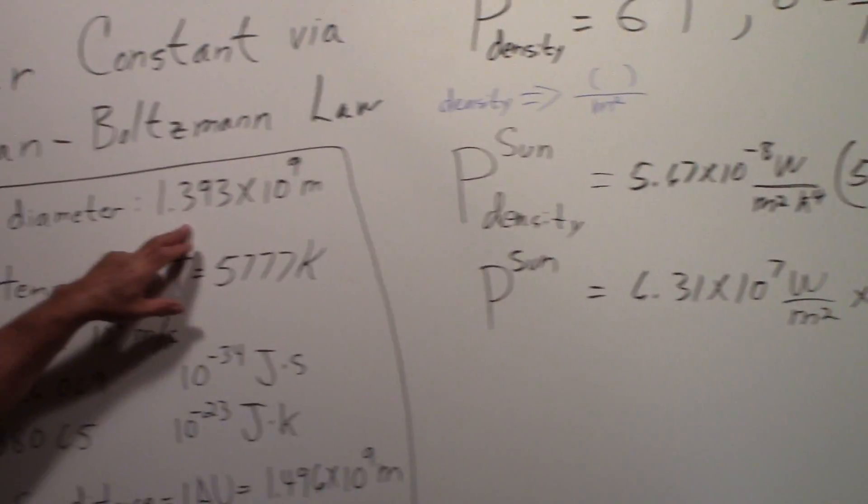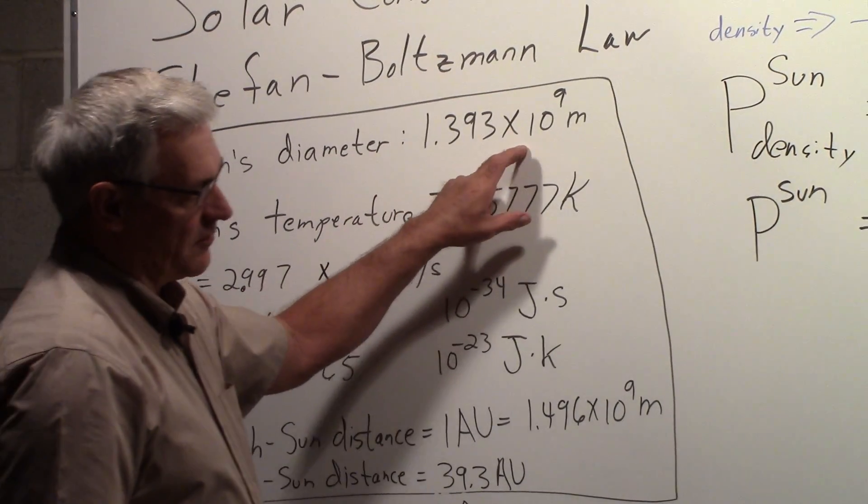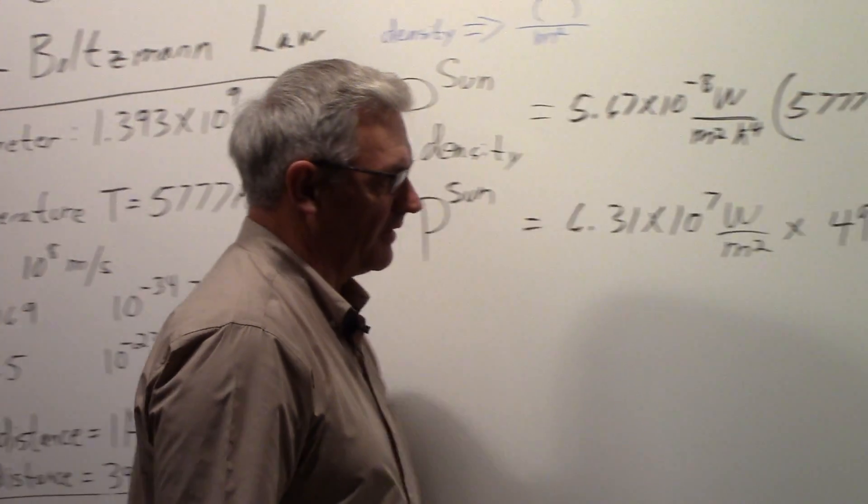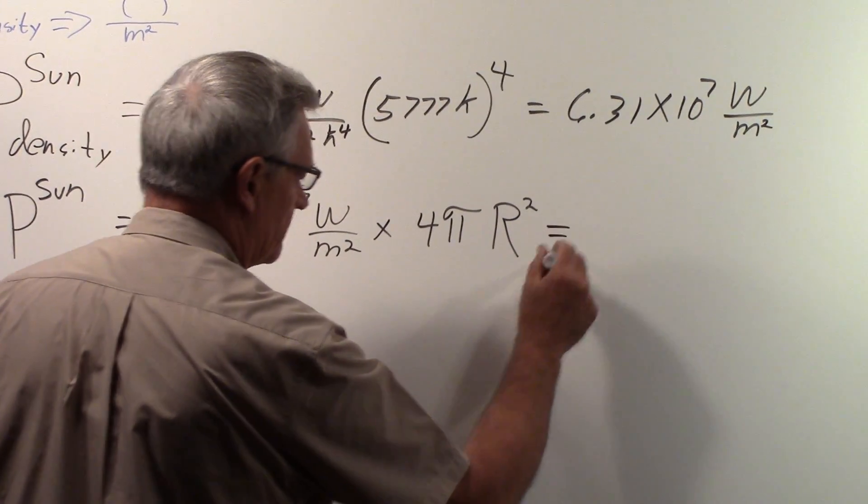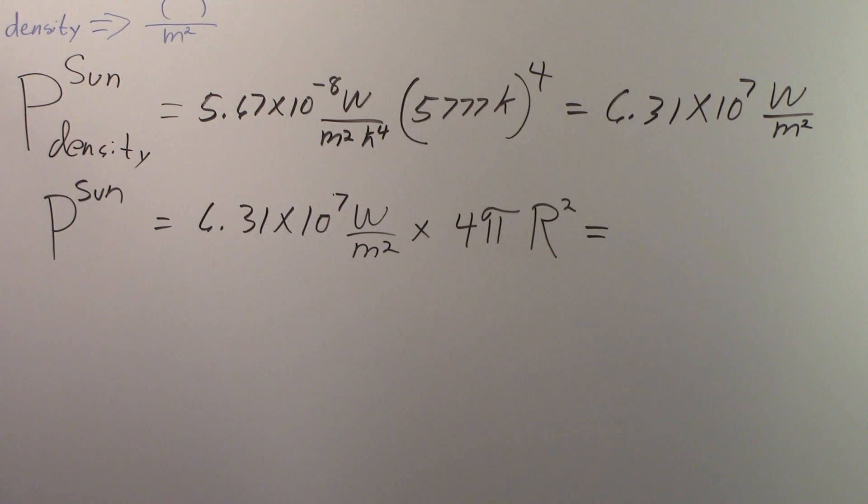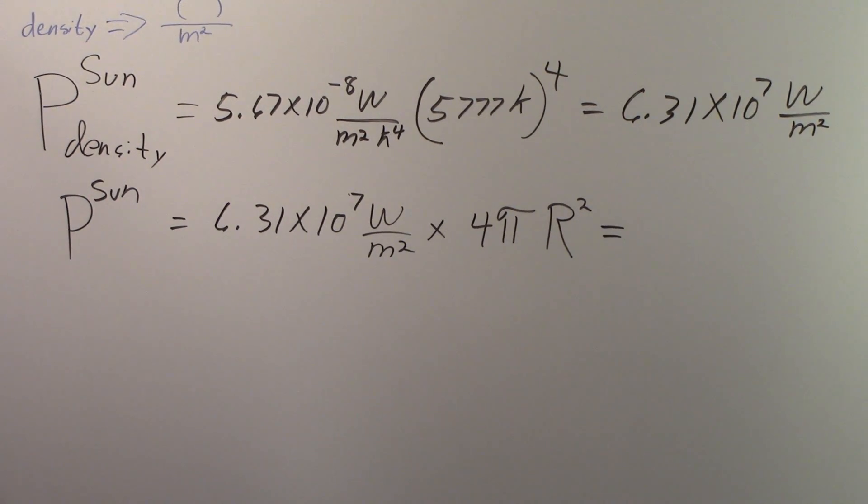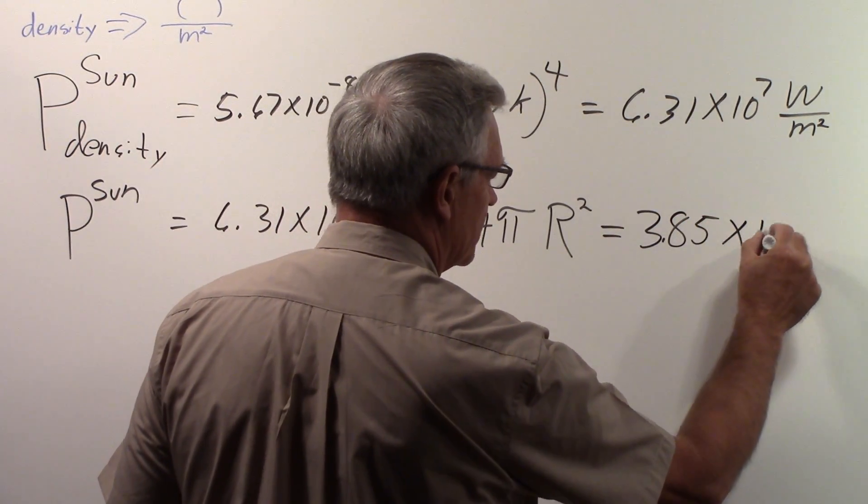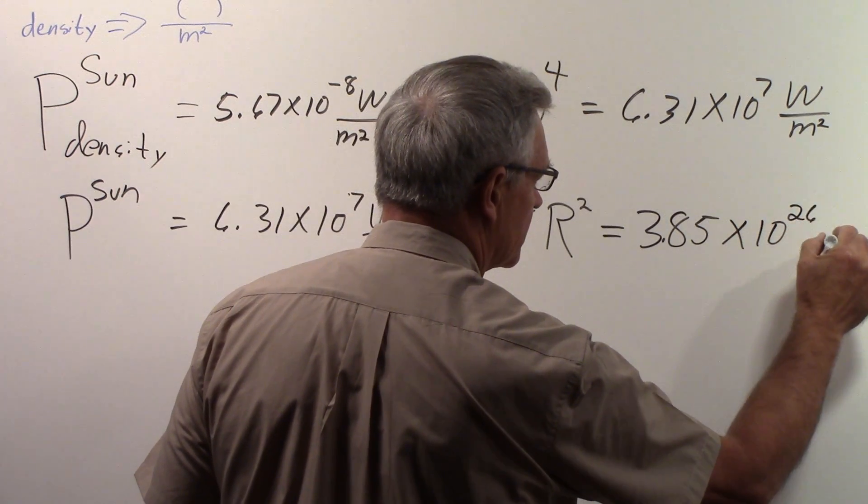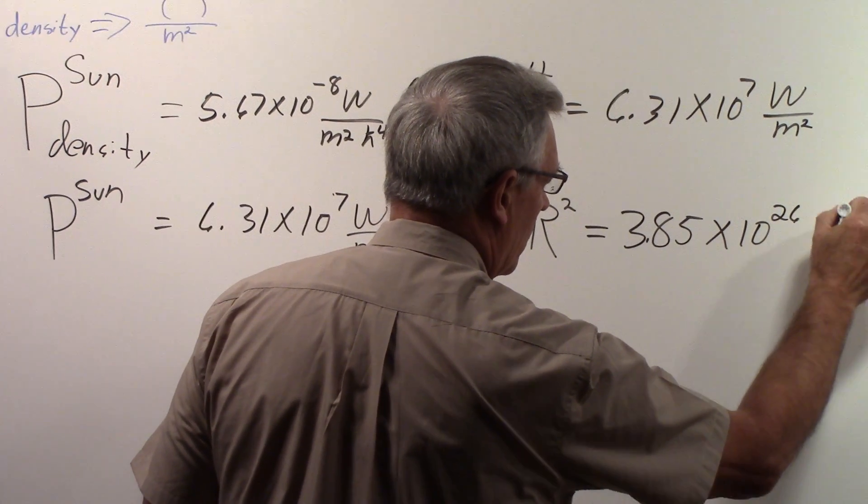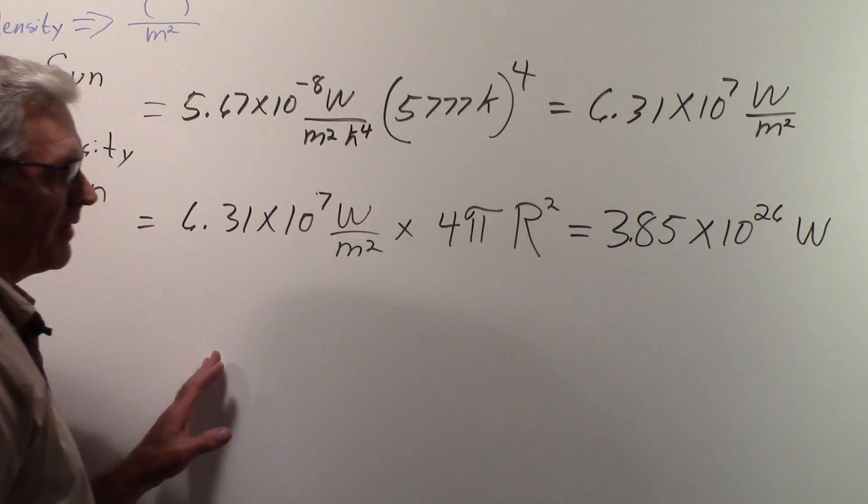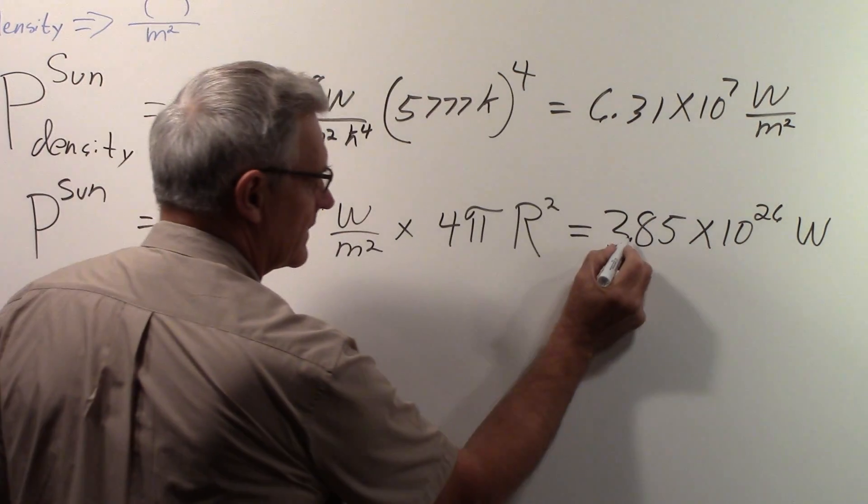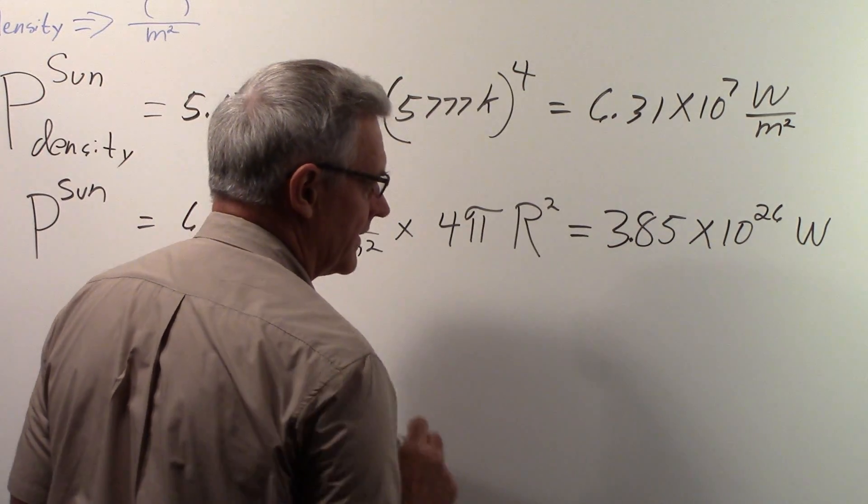And I've shown the diameter here. So if you divide this number by 2, and put it in here, and multiply things out, you will get 3.85 times 10²⁶ watts. So that is the total power being put out by the sun.